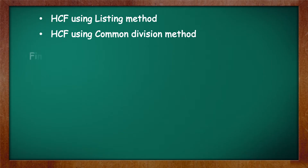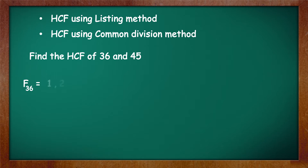Find the HCF of 36 and 45. To use the listing method, we have to list the factors of both the numbers. F-36 is equal to 1, 2, 3, 4, 6, 9, 12, 18 and 36.